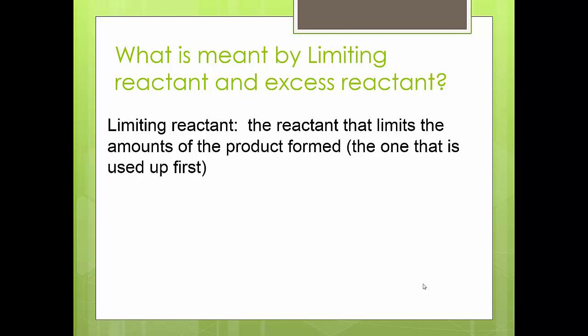Let's write the definitions. What is a limiting reactant? We have two reactants. Remember, reactants form products, so we are talking about reactants on the left-hand side. A limiting reactant is the one that gets used up first. Not everything is always in a perfect ratio — sometimes you use up something first and the reaction stops. When it's gone, the reaction stops and you can't make any more product.